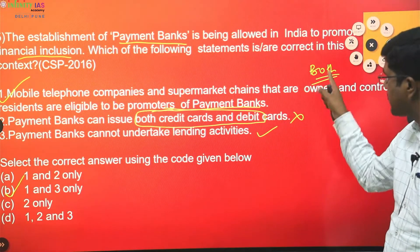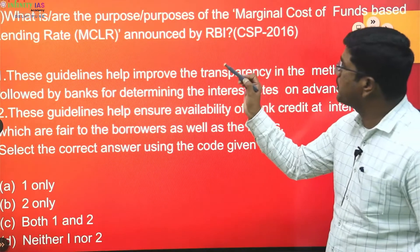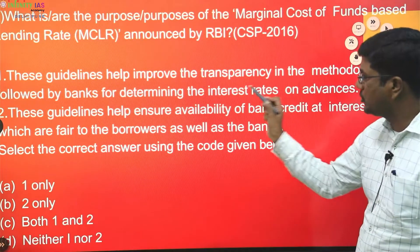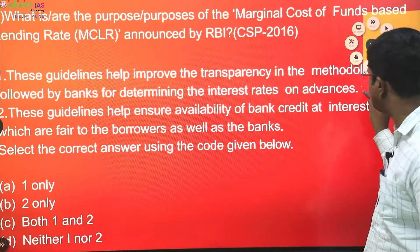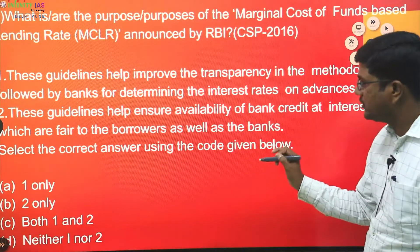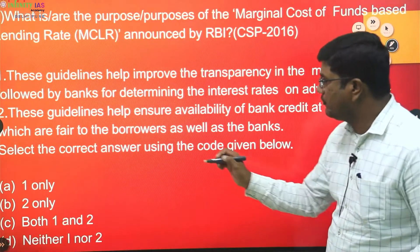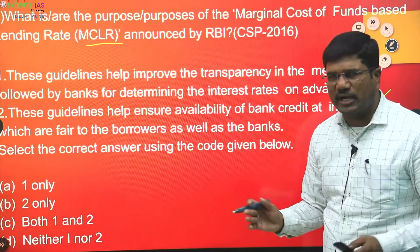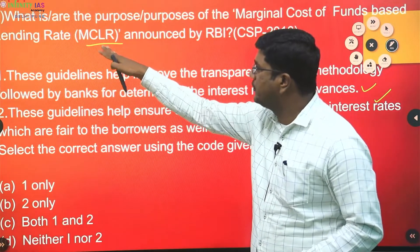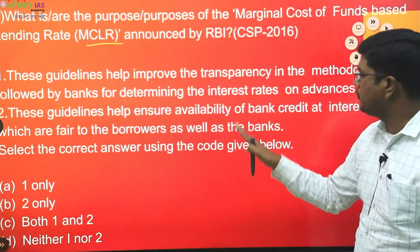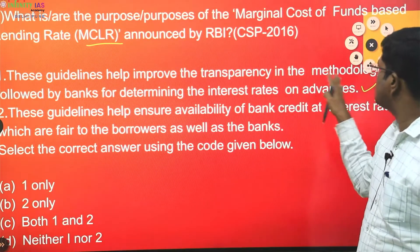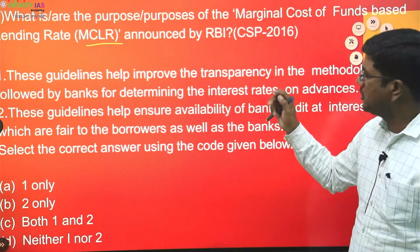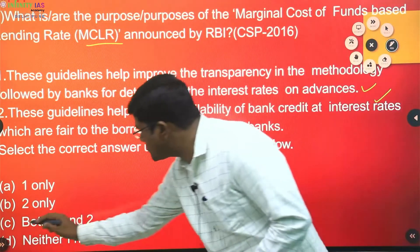Next question: what are the purposes of the Marginal Cost of Funds-based Lending Rate (MCLR) announced by RBI? Statement one — these guidelines help improve transparency in the methodology followed by banks for determining interest rates on advances — yes, true. Statement two — these guidelines help ensure availability of bank credit at interest rates which are fair to borrowers as well as banks. MCLR replaced the earlier concept of base rate. Both statements are correct, so the answer is both one and two.